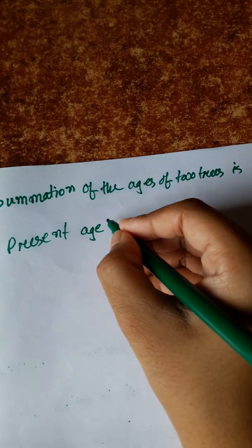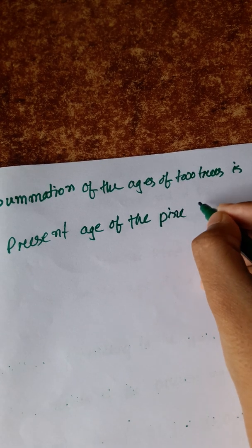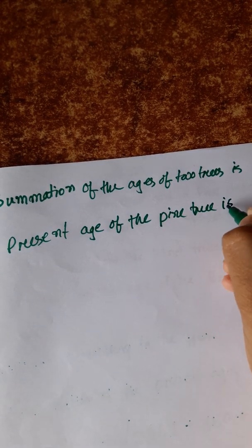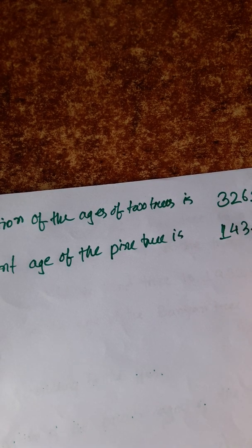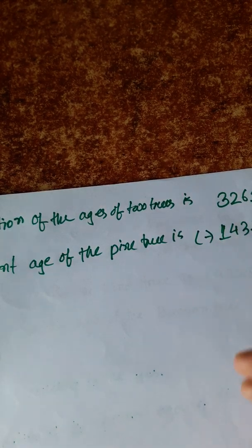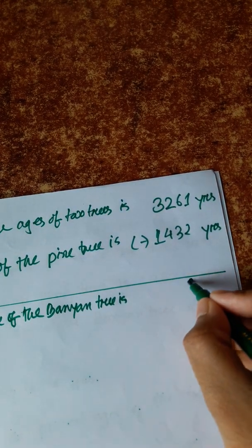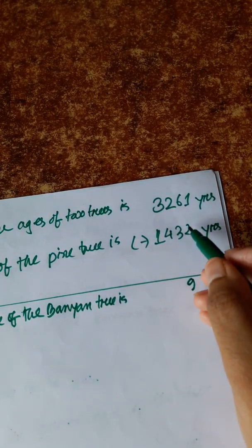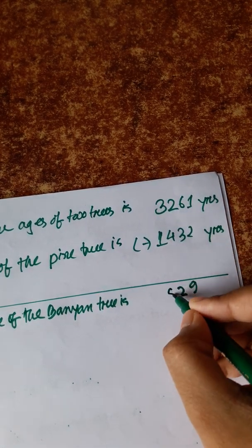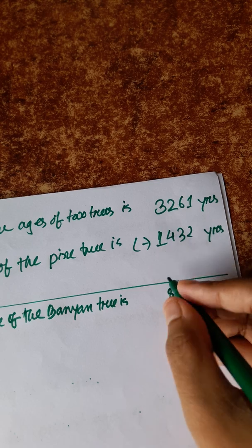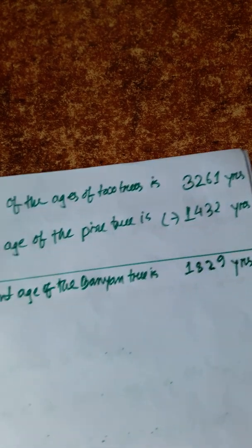Present age of the Pine tree is 1,432 years. So present age of the Banyan tree is 3,261 minus 1,432. We calculate: 1 minus 2 we need to borrow, 11 minus 2 is 9, 6 minus 1 is 5 minus 3 is 2, 3 minus 1 is 2 minus 4 we need to borrow, 12 minus 4 is 8, 3 minus 1 is 2 minus 1 is 1. The present age is 1,829 years.